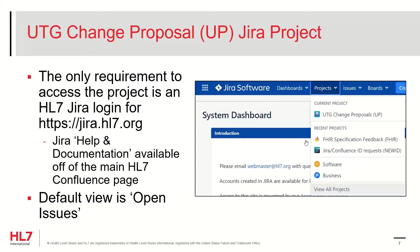Each set of HL7 terminology change proposals are managed as a single JIRA issue or ticket. The only requirement to view the vocabulary tickets is a JIRA login, which HL7 members should already have. While the search in JIRA is fairly intuitive, HL7 offers several how-to webinars on JIRA basics, searching JIRA issues, and working with JIRA issues via their HL7 documentation and help Confluence page.